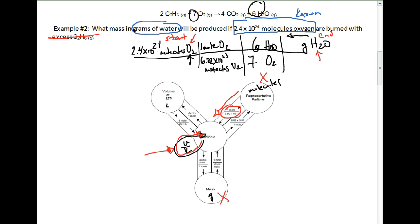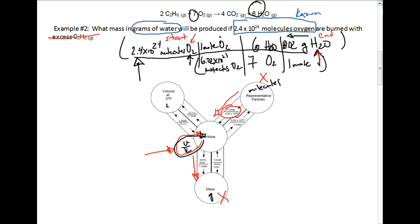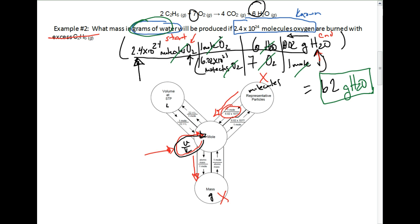The last step is going from moles to grams using molar mass over one mole. We calculate the molar mass of water: two hydrogens and one oxygen gives us 18.02 grams per mole. Multiply everything across the top and divide everything on the bottom in parentheses. The calculator gives 61.57, which rounds to 62 grams for two sig figs. Molecules cancel, moles cancel, and we're left with grams of H2O — which is exactly what we were looking for. The answer is 62 grams of water.